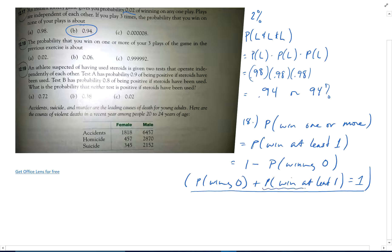This is a tough calculation. Winning zero times is easy. In fact, we just did that in number 17. So number 18 is going to be one minus 0.94 is 0.06, or 6% of the time.